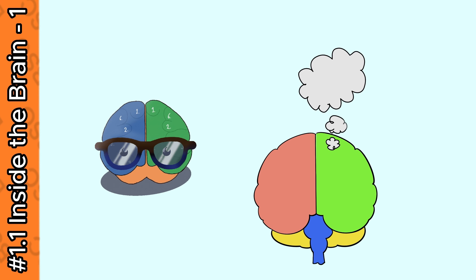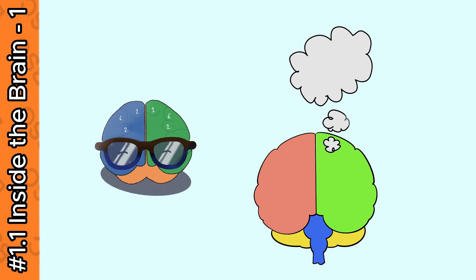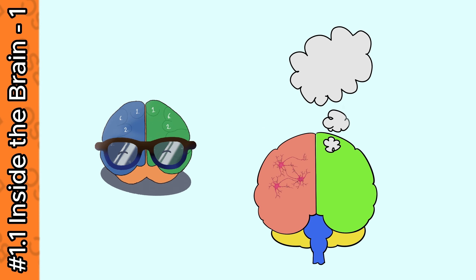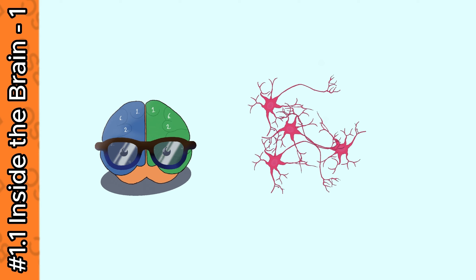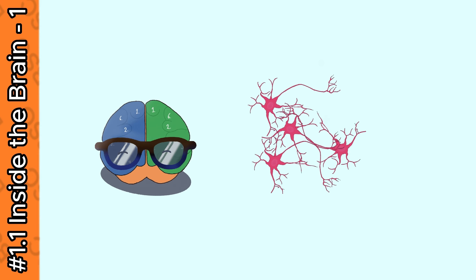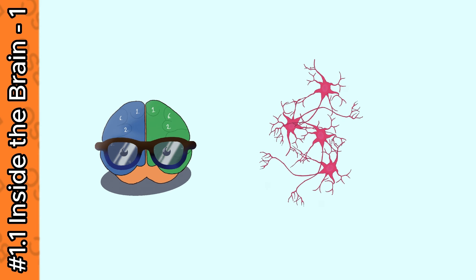The generation of thoughts happens somewhere deep in the microscopic world of our brain, which is made up of tiny special cells called neurons. These neurons are firing and communicating with their neighboring neurons all the time. As we reach this microscopic world, we see that the neurons are packed very closely to each other. Their packing style is completely random — an amorphous structure, as we call it in molecular science.